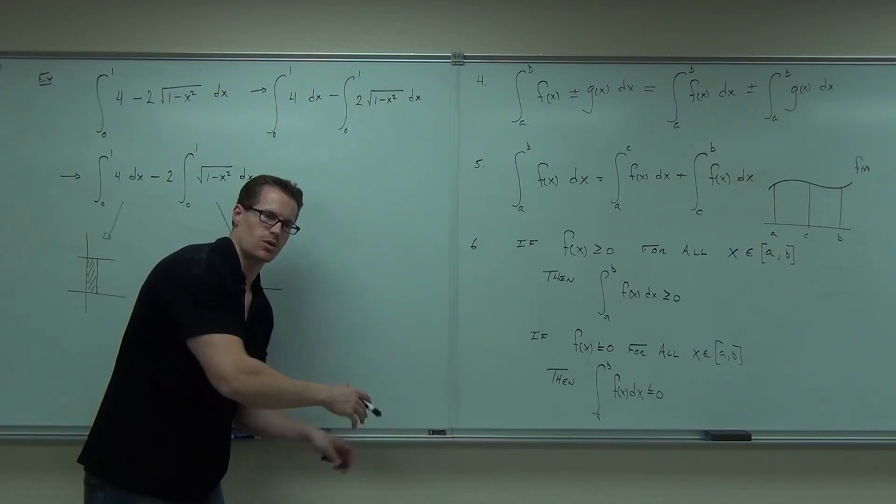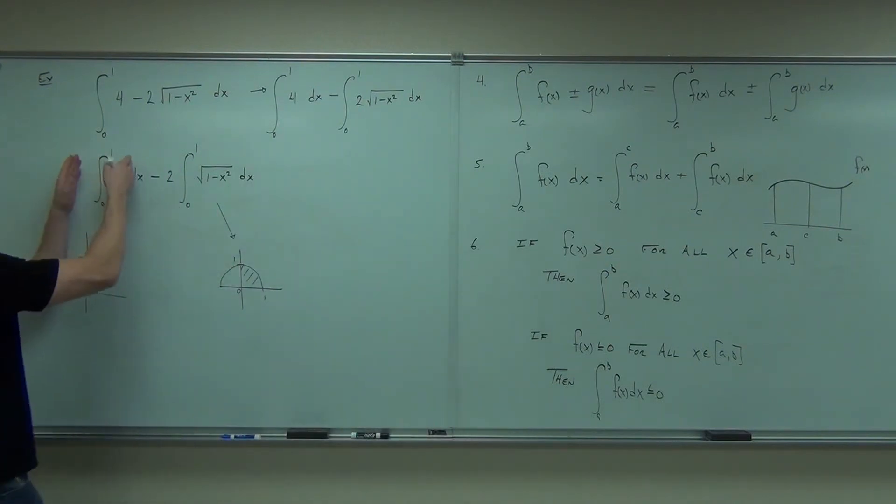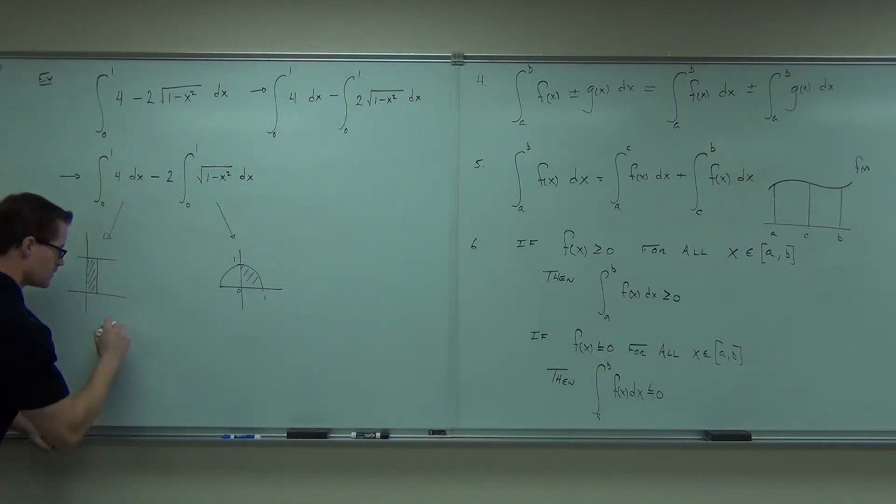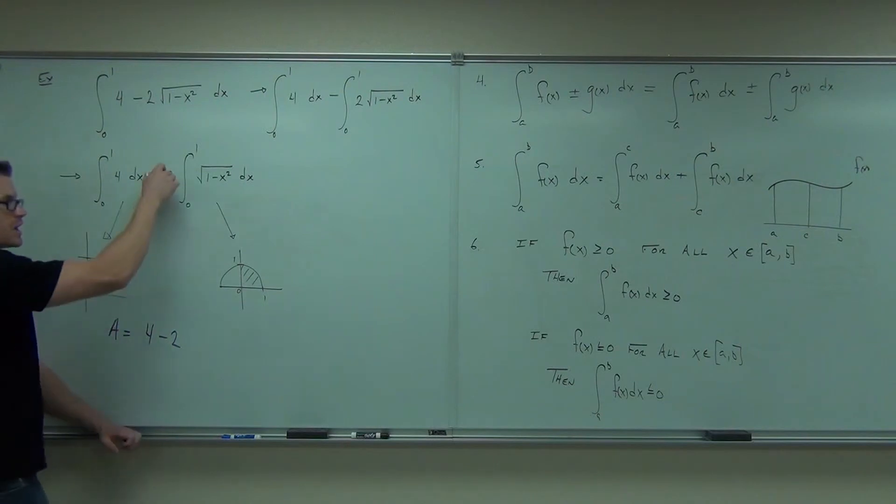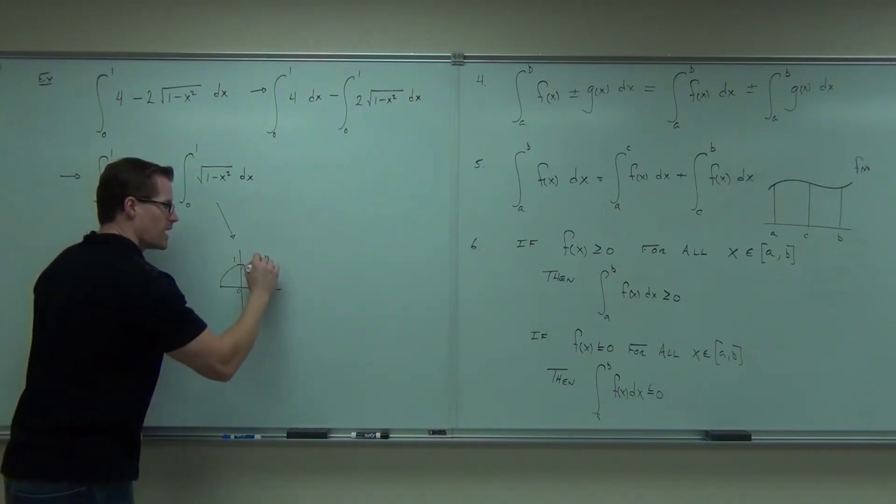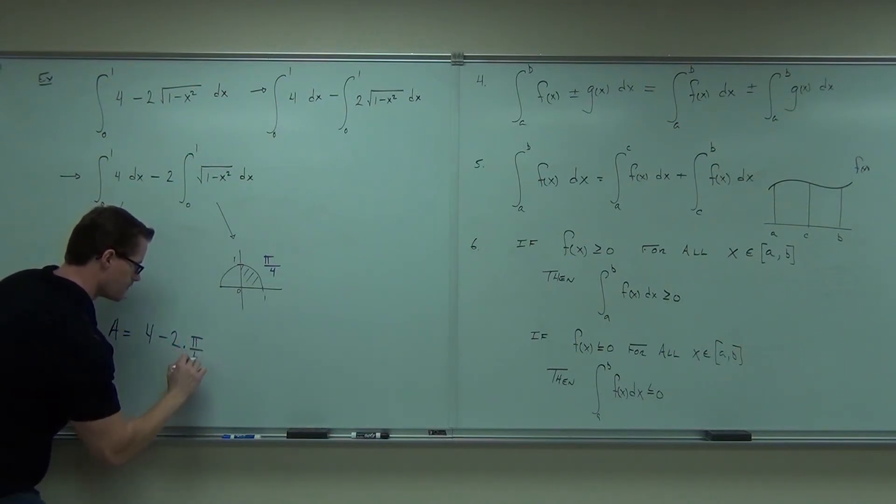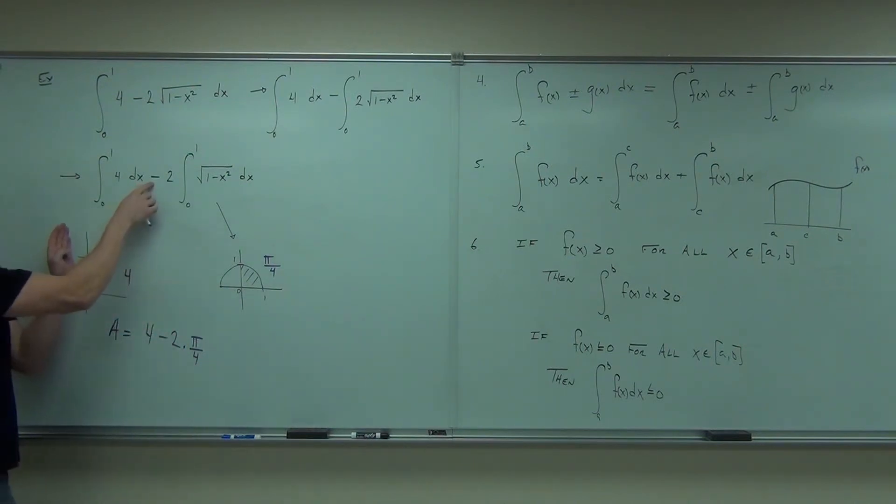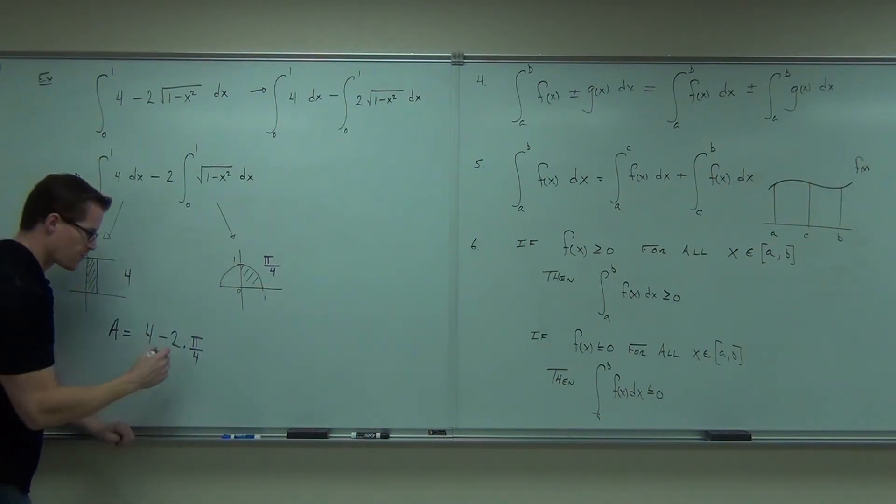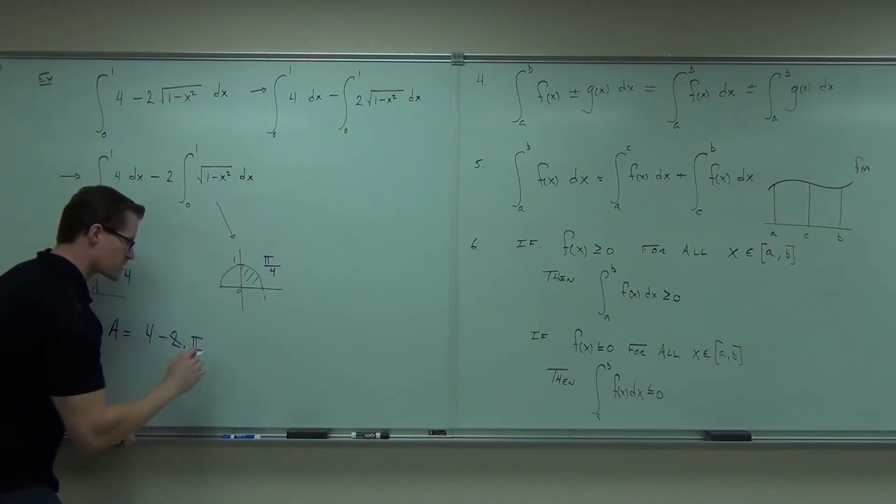So basically what our integral comes down to, our area is, what's this whole area? Minus 2 times, don't forget the 2. This was pi over, what was it, pi over 4? We got this area, minus 2 times this area. So 4 minus 2 times pi over 4. If we simplify just a little bit.